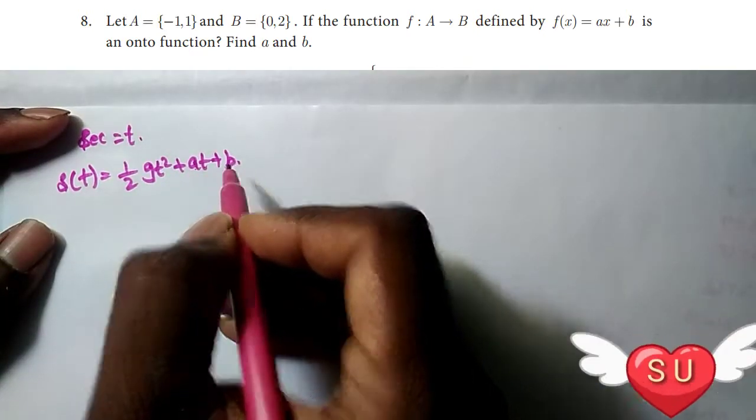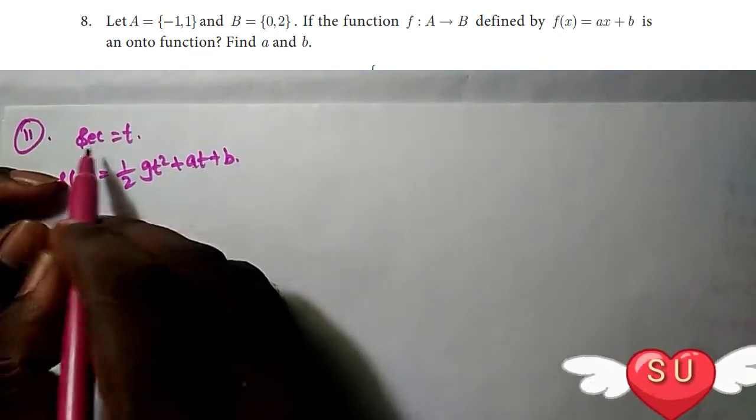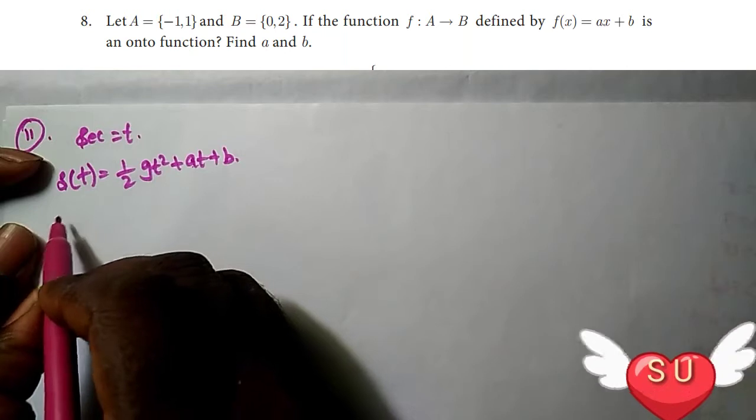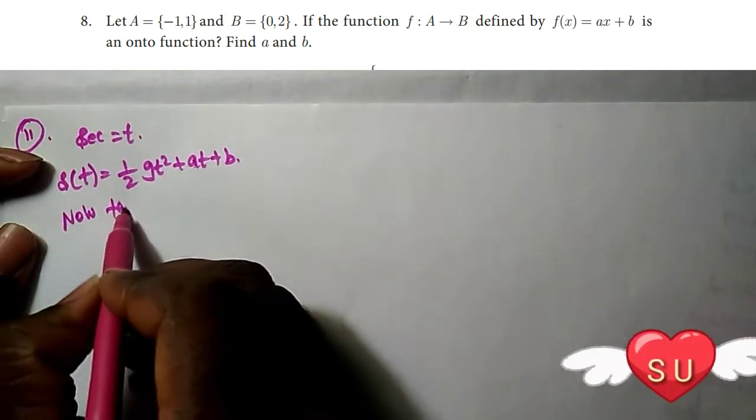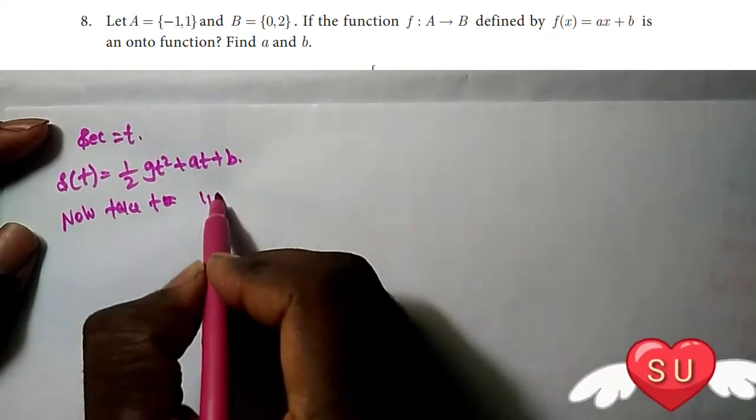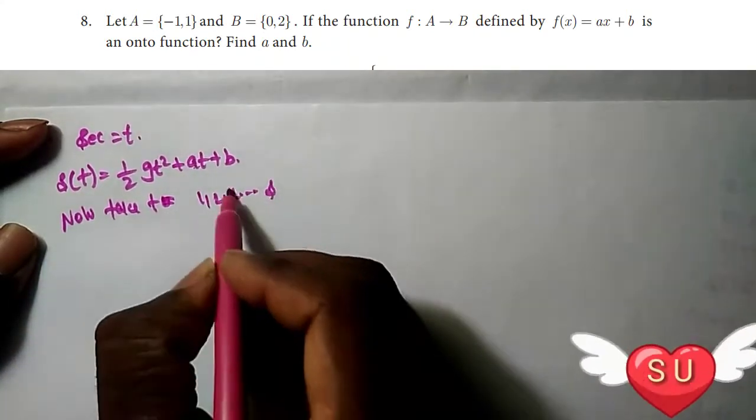We need to check if the function is one-to-one. Let's take T = 1 second, 2 seconds, and 3 seconds.